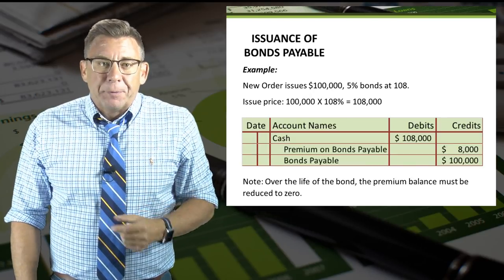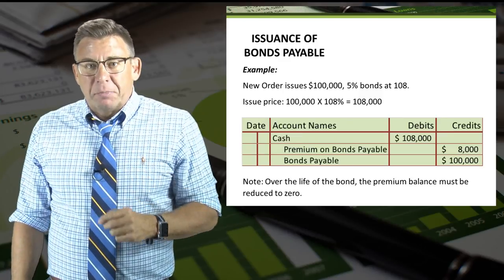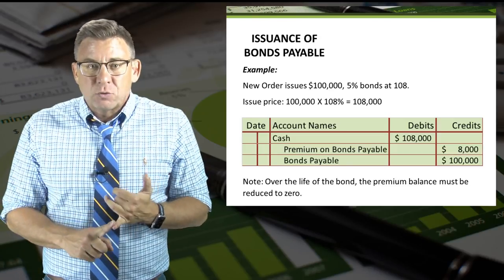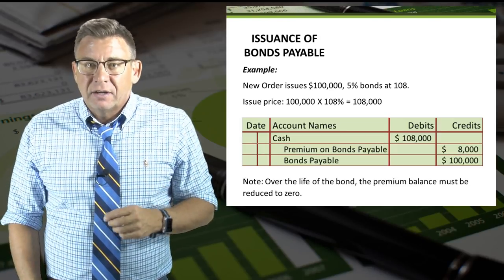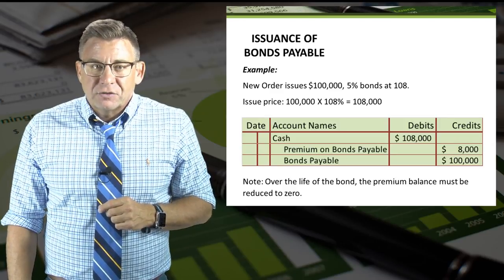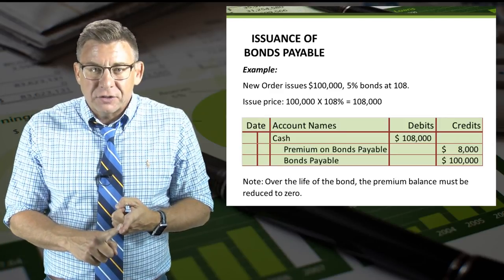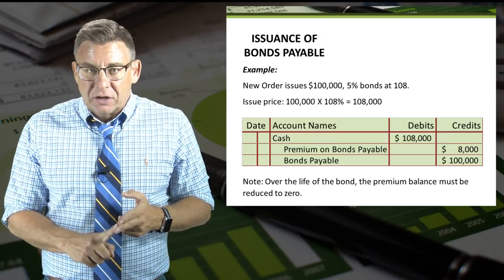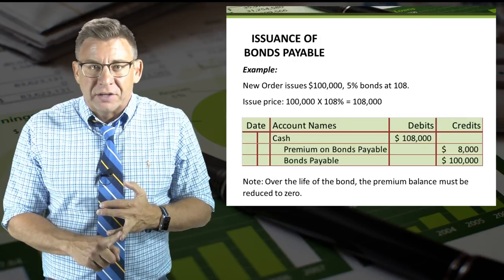New Order issues $100,000, 5% bonds at 108. The issue price is $100,000 times 108%, which equals $108,000. So we debit cash for $108,000, credit premium on bonds payable for $8,000, and credit bonds payable for $100,000.